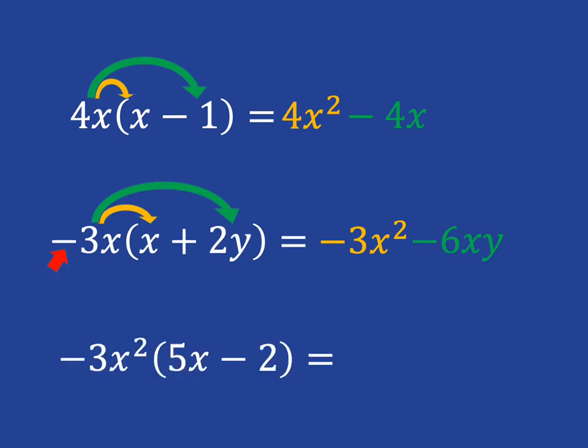And then something like this one, again take note of the negative, and first you will multiply negative 3x squared with 5x, so negative 3 times 5 is negative 15, and x squared times x is x cubed.